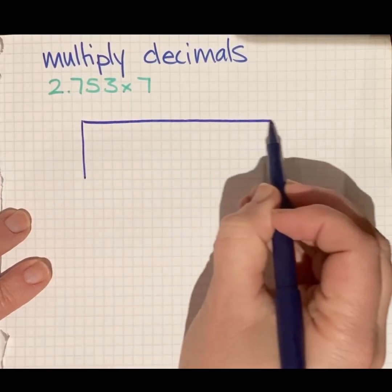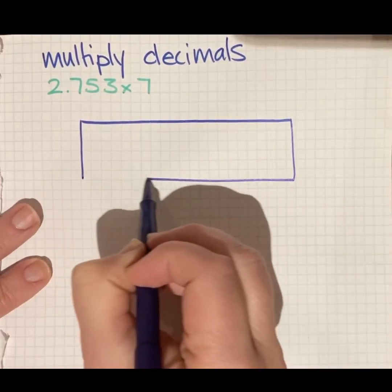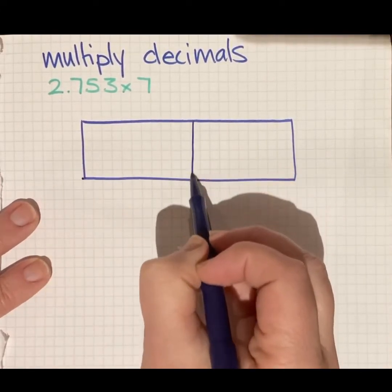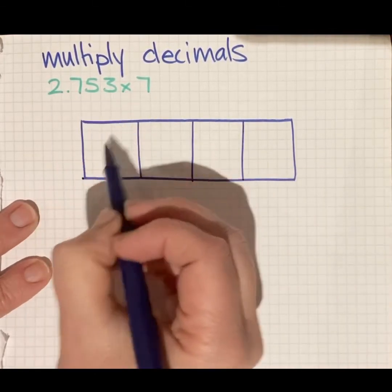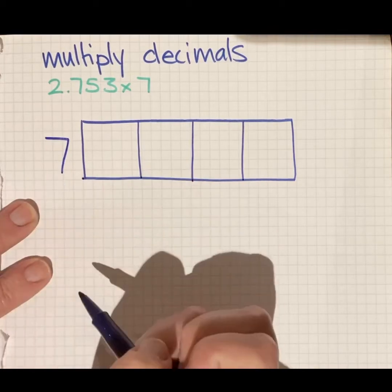I just need to have one row. Nice neat row. I divide it into four columns because I have four digits in my biggest number and seven in my multiplier.